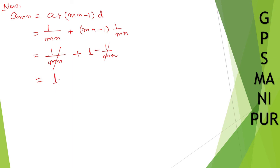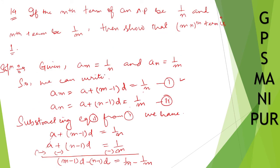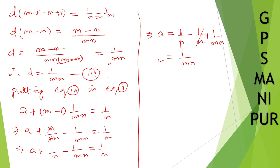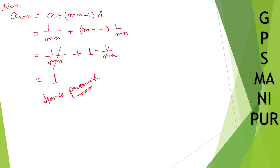Which is equal to 1 — exactly what the question is asking. Therefore, hence proved. The book asks us to show that a_mn equals 1, and we have shown it. We found the values of a and d, then substituted into a_mn to get 1.